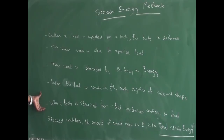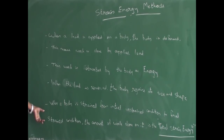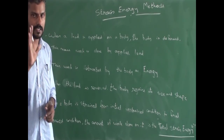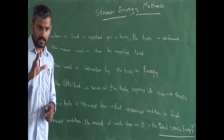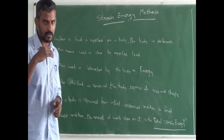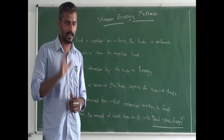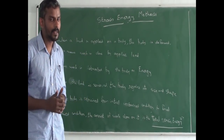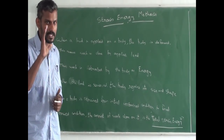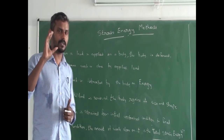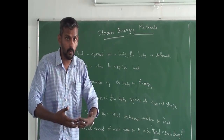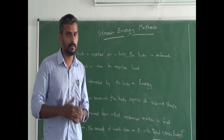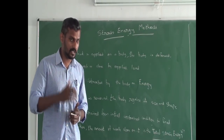When the body is strained from its initial unstrained position to the final strained condition, the amount of work done on it is the total strain energy. The body is deformed and we do the total amount of work, storing the amount of energy from initial to final strain.